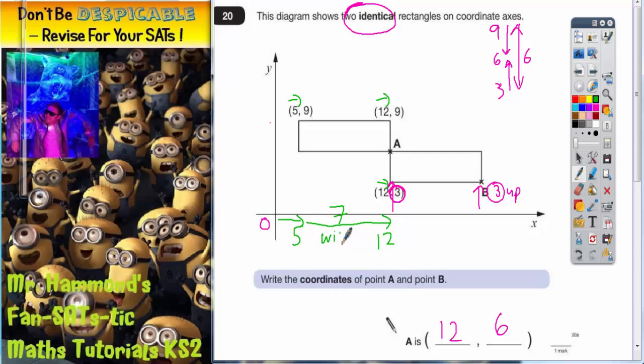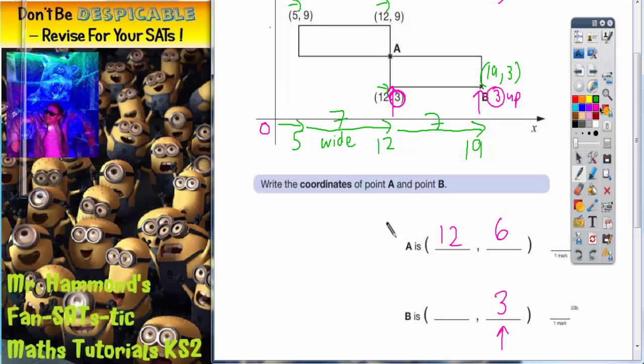Then this one must be 7 wide as well. So if we're already on 12 here, we've got to go another 7. It's going from 5, adding on 7 for the length of the rectangle to 12, then adding on another 7 because the rectangles are identical. 12 add another 7 is 19. So we must have gone 19 across all together. This point is going to be 19 across, and we've already said it is 3 up. That's your answer: 19 across and 3 up.